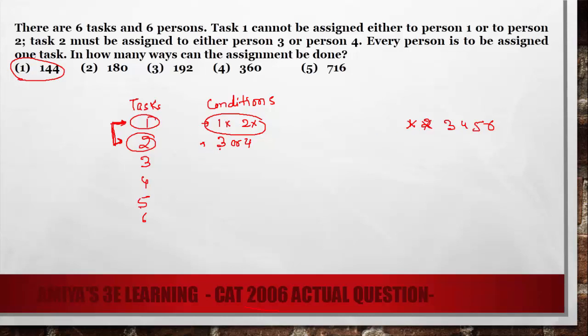And one person either 3 or 4 should be reserved for task 2. Among the 6 options, so we have only 3 options for task 1.